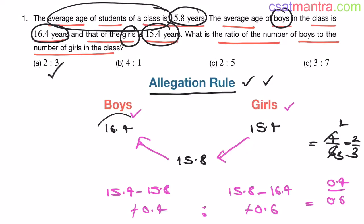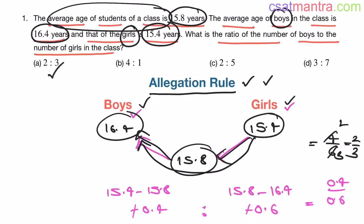Very easy method. You have boys average, you have girls average, and mixture's average. The mixture consists of boys and girls. You would be coming from this side to this side, this minus this and this minus this. Then boys and girls ratio would be 2 by 3, 2 is to 3.